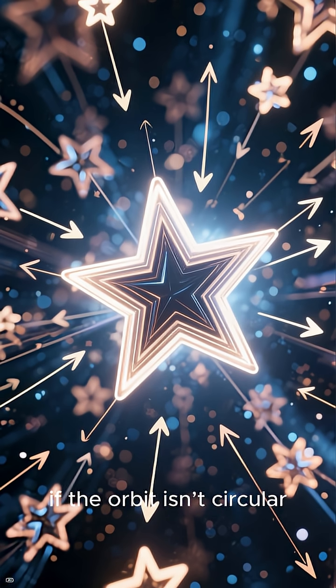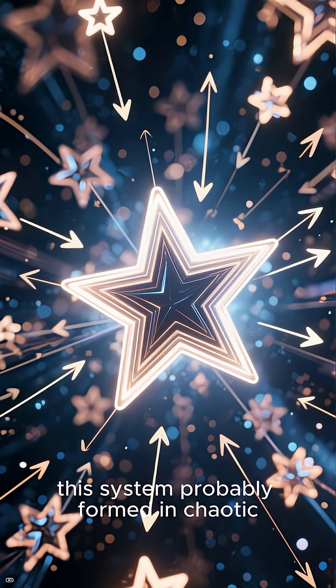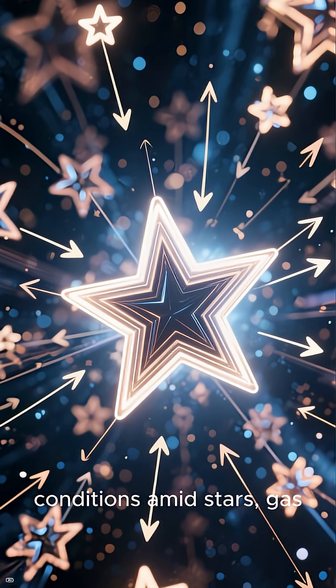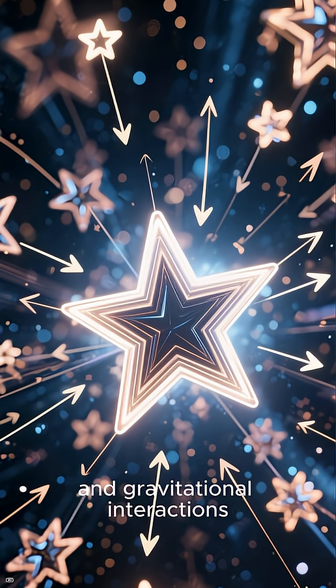In other words, if the orbit isn't circular, this system probably formed in chaotic conditions, amid stars, gas, and gravitational interactions.